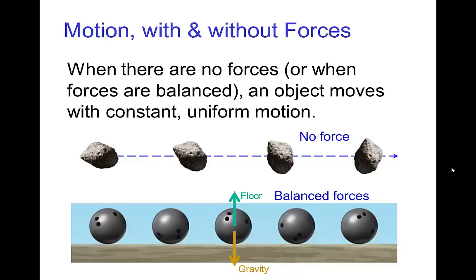But if we have balanced forces, like this bowling ball rolling on the floor, we have the force of gravity pulling down on the ball, but this force of gravity is balanced by the support force of the floor, and those two are in balance. And if we have negligible friction, then these two balanced forces lead to constant uniform motion — constant speed motion in a straight line.